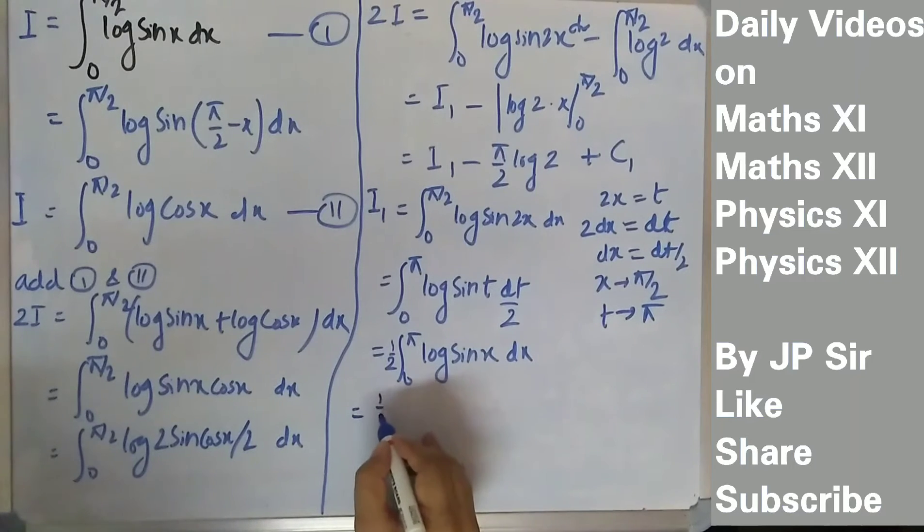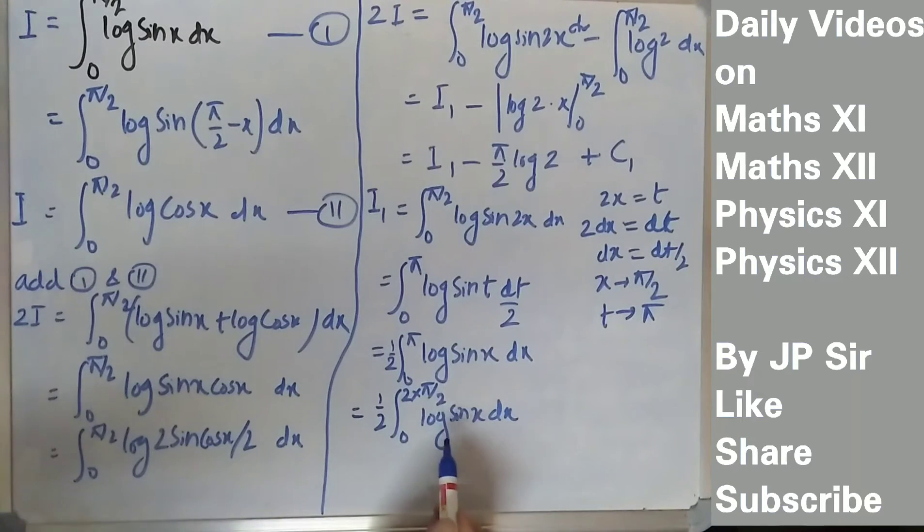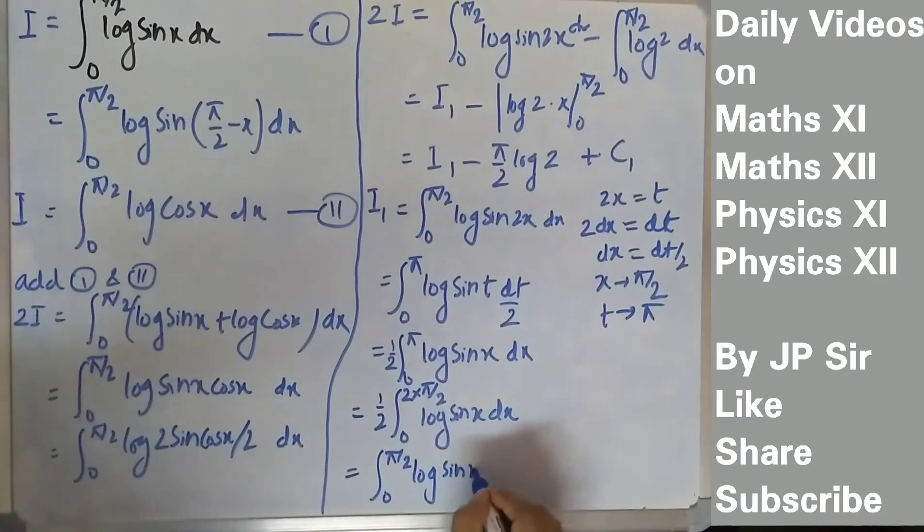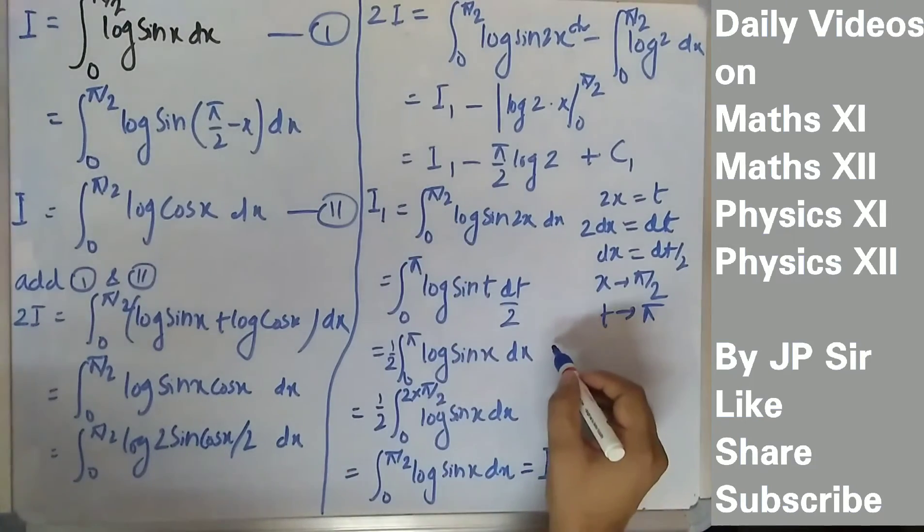Now there was a property. I'll break this into 1 upon 2 times integral from 0 to pi by 2 of log sin x dx. Since sin pi minus x is again sin x, we can use that property and take this 2 out. We will have 0 to pi by 2 log sin x dx. This thing has become just I. 0 to pi by 2 log sin x dx is I, the same thing. So we can take this i1 as I.